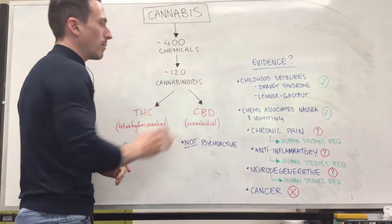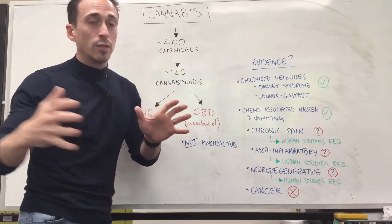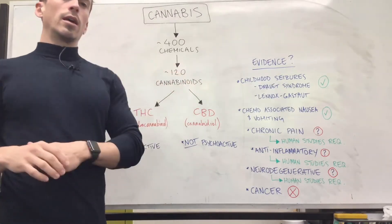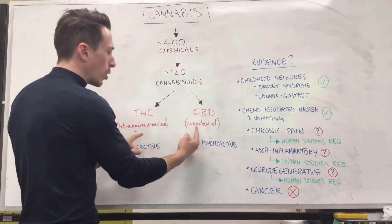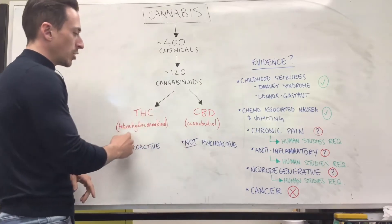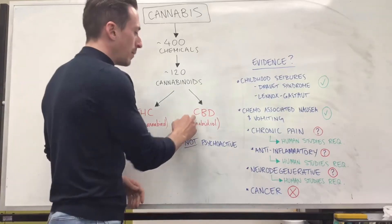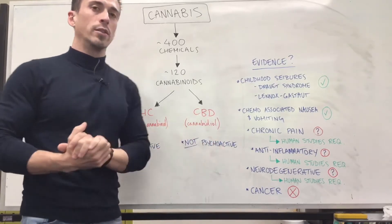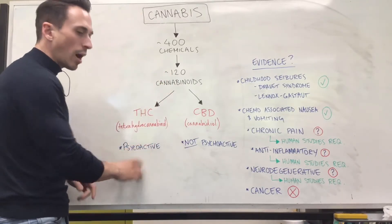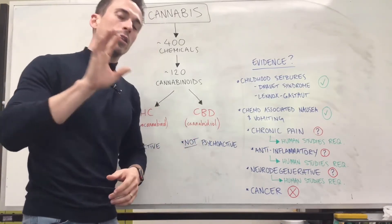So 120 chemicals within cannabis have been shown to bind to these receptors and have a variety of effects depending on what subtype of receptor they're bound to. Now of these 120 cannabinoids, you've probably heard of these two: THC and CBD. THC is tetrahydrocannabinol, the psychoactive component, and CBD which is cannabidiol is the non-psychoactive component. To be more specific, THC gives you that high and is intoxicating, and CBD does not give you that high and is not intoxicating.